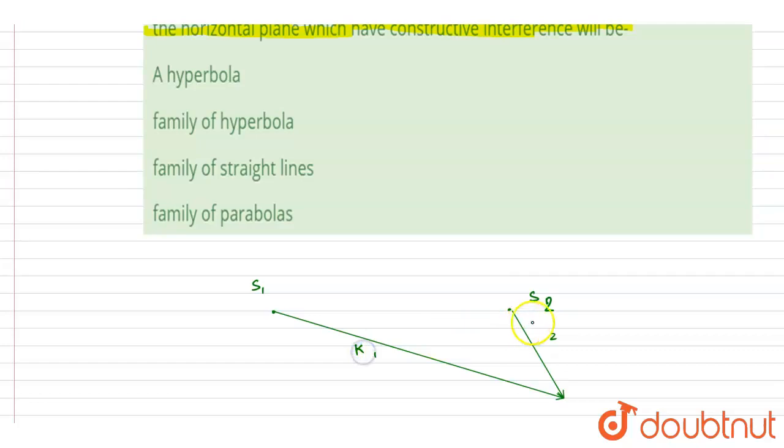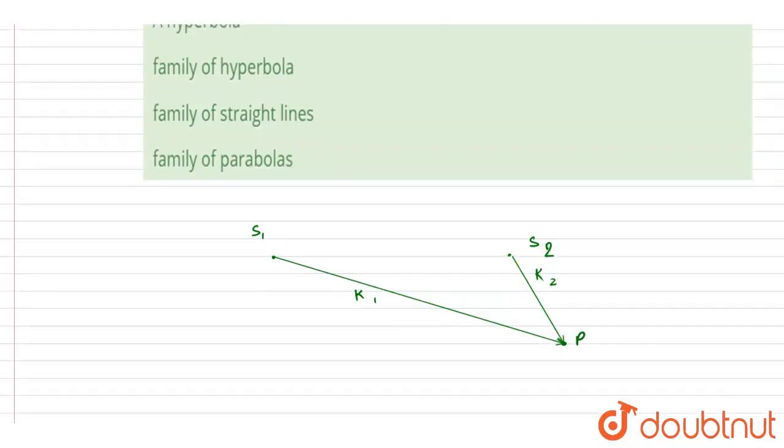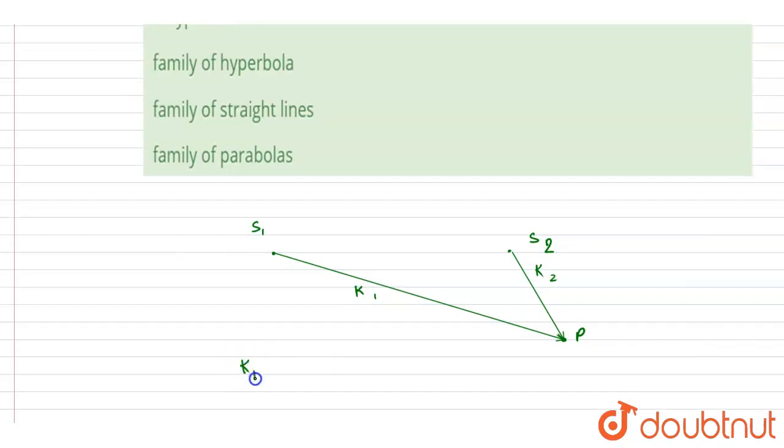So the distance of this point from the two sources is k1 and k2. We want this |k1 - k2| to be equal to nλ. You can put the value of n equals 1, you will get the first maxima. Put the value of n equals 2, you will get the second maxima. So if you